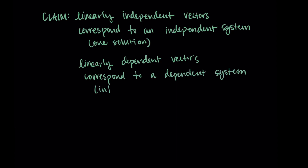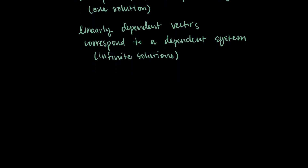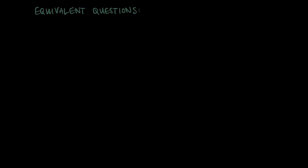Similarly, linearly dependent vectors will correspond to a dependent system where there are infinite solutions. Maybe you can see this claim and just believe it, but I really want to unpack it and go through some of the ideas behind this. This notion of linear dependence revolves around linear combinations and is related to span, so I want to go back to those ideas and talk about them briefly.